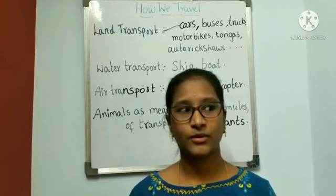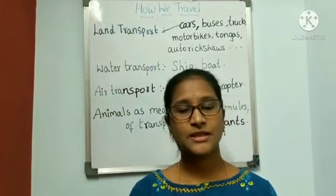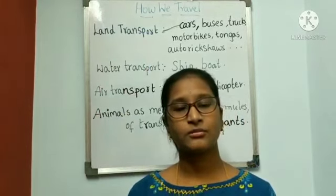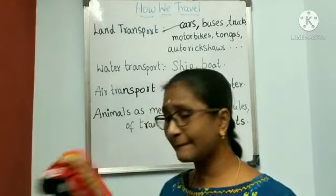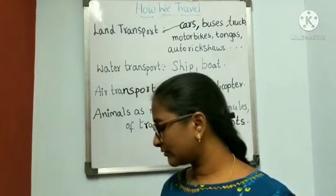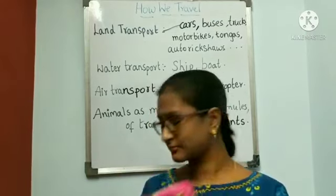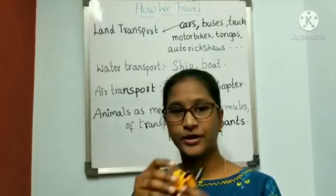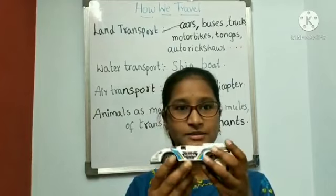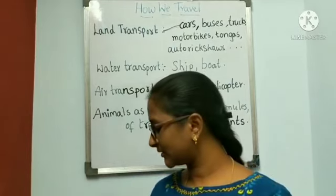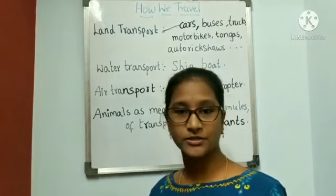Now let us learn about land transport. Some means of transport move on land. Examples like buses, auto rickshaws, cars, trucks, and trains. We have local trains and metro trains also.